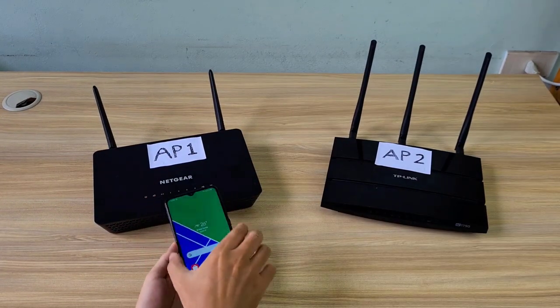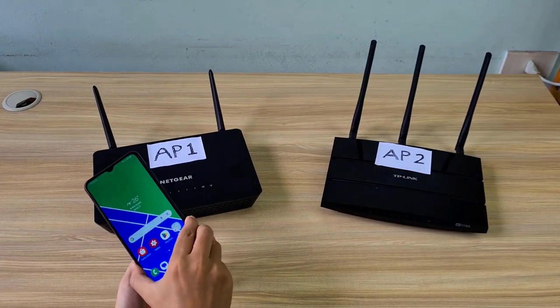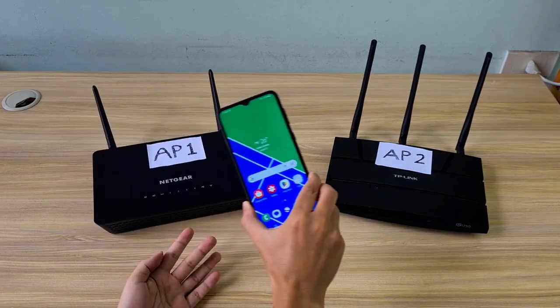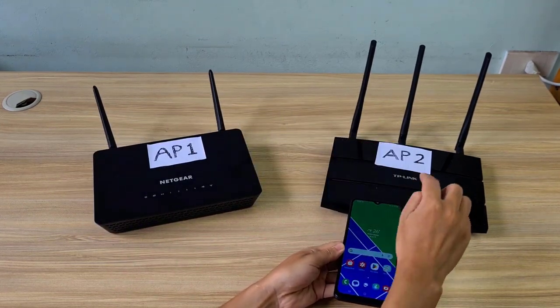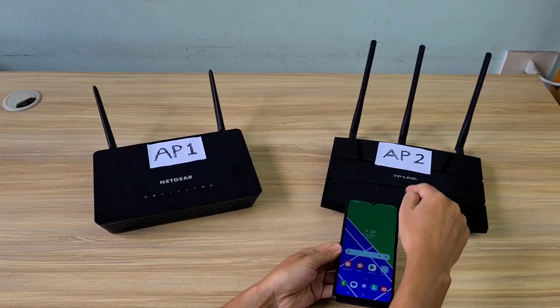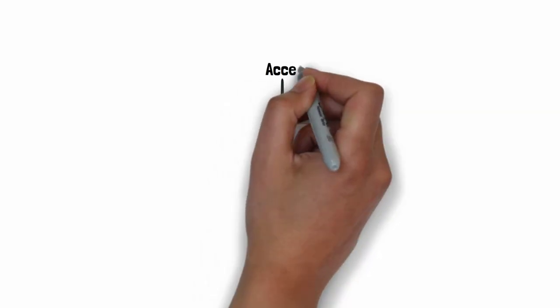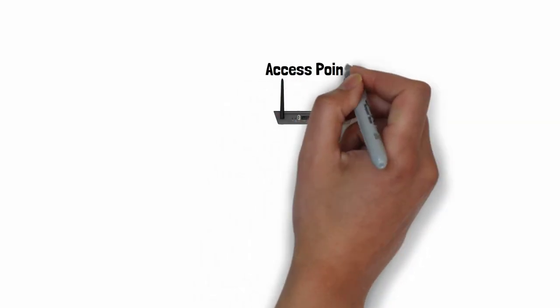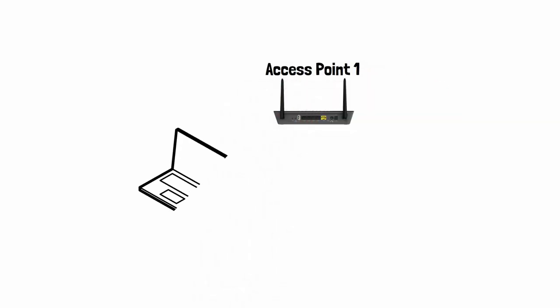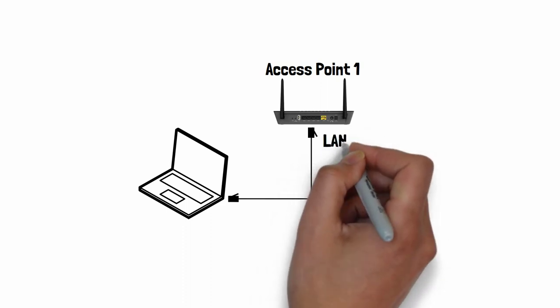These are the two routers I use in this video. I will turn them into Wi-Fi access points, and on those access points I will set up fast roaming between them for the purpose of this video.